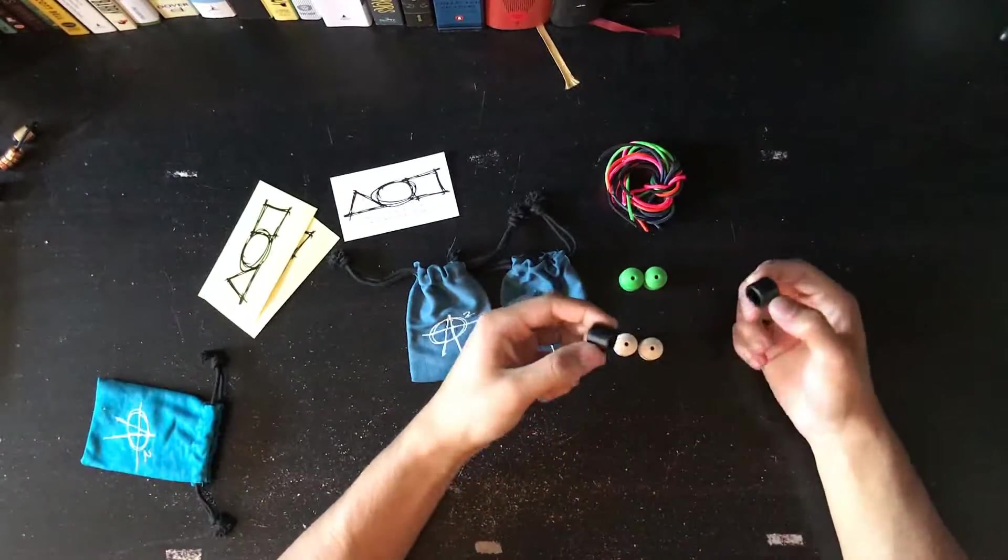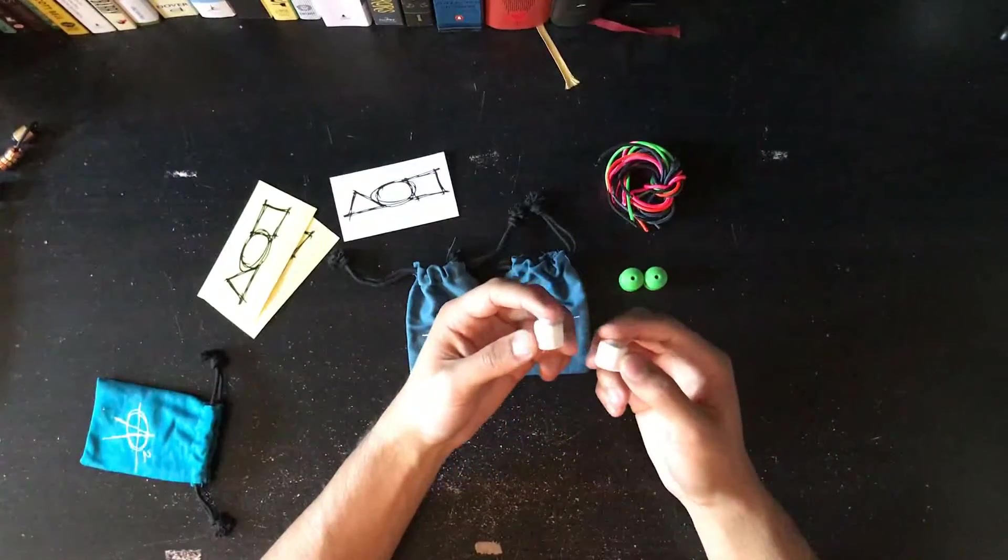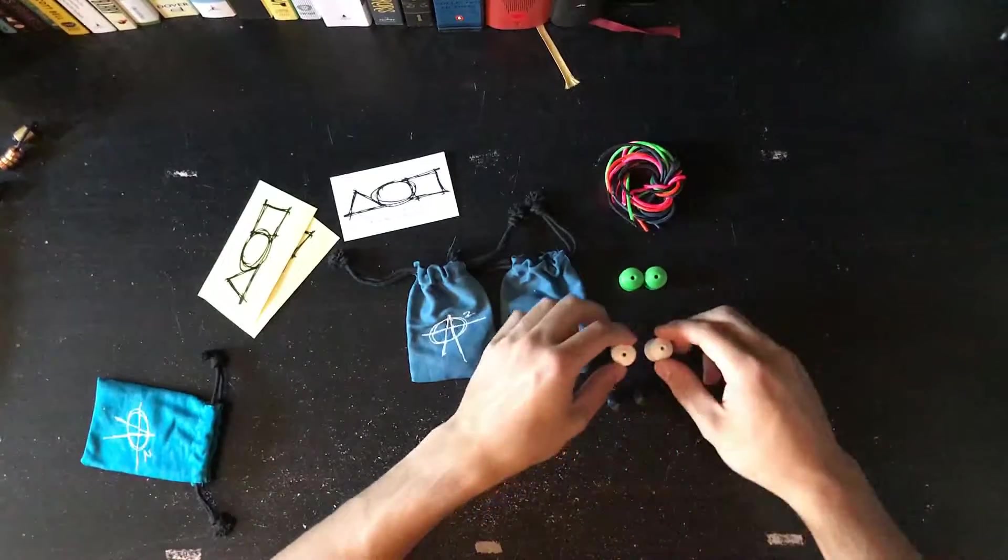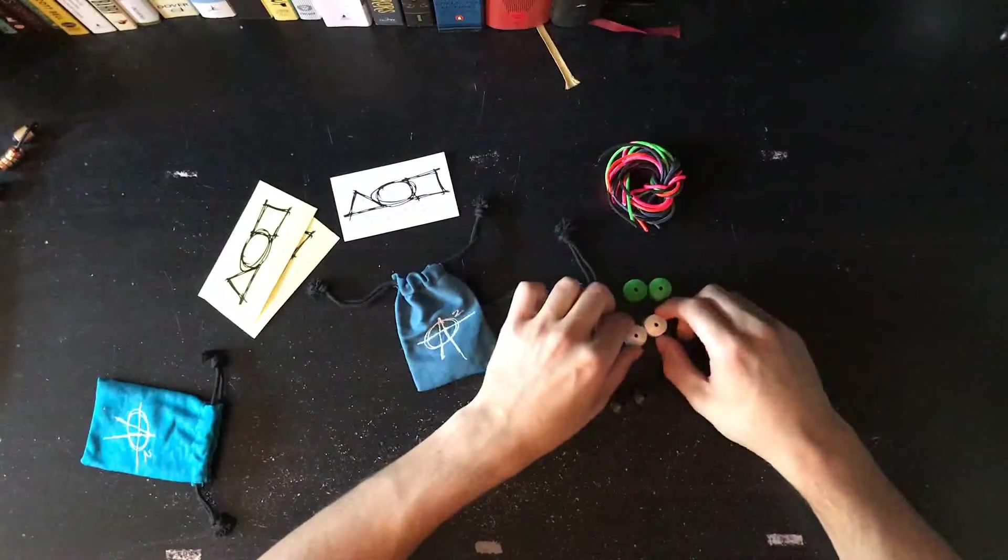So they came down from seven fifty, five dollars a set. And these were three fifty, they came down from five dollars a set. And these, of course I got these, they're green. Why would I not get those?